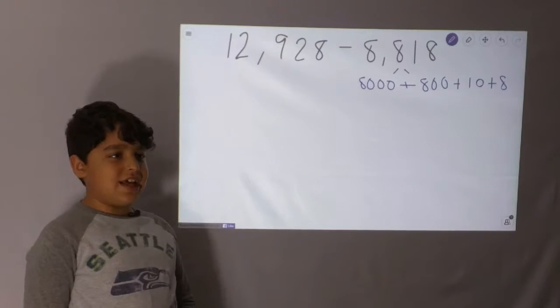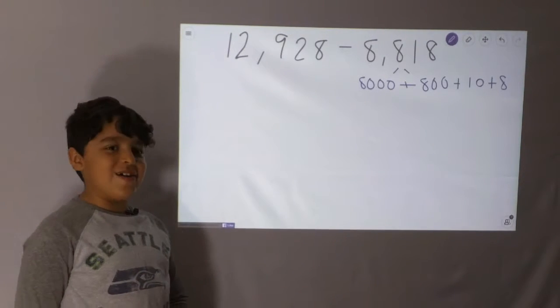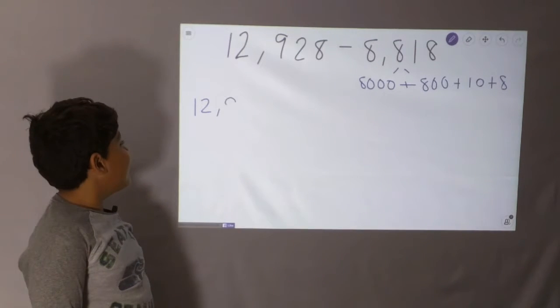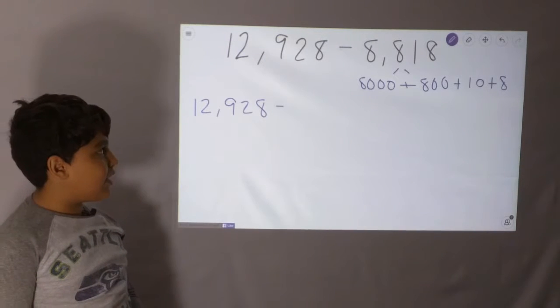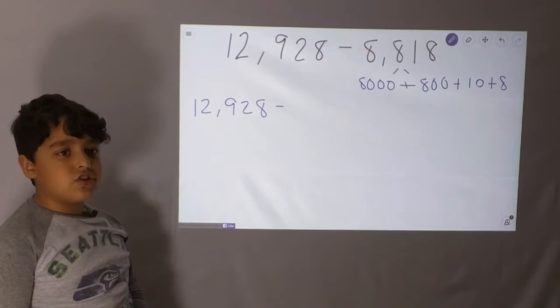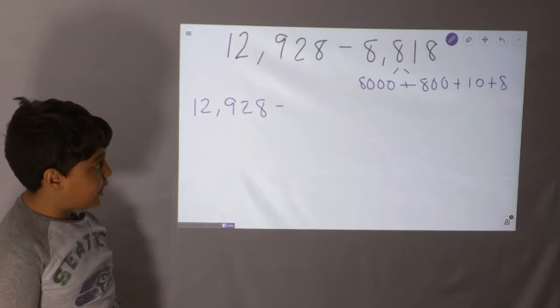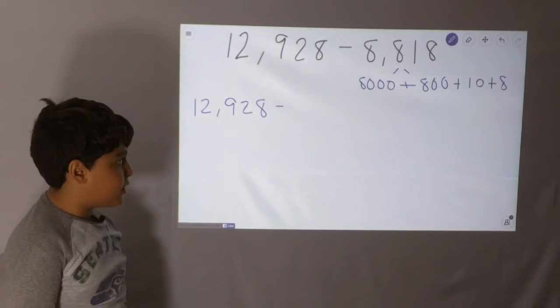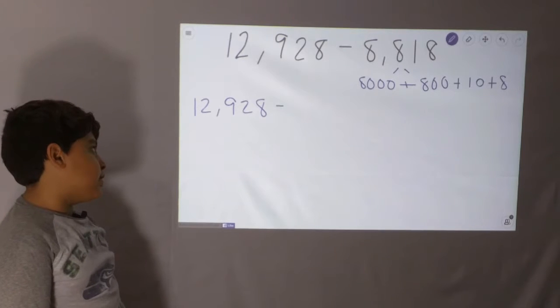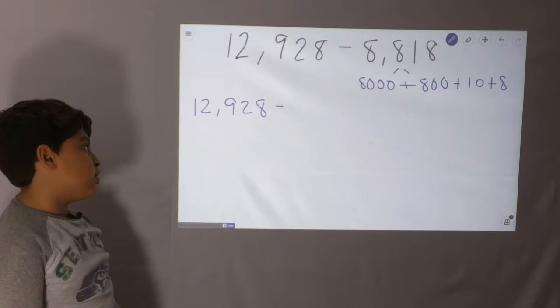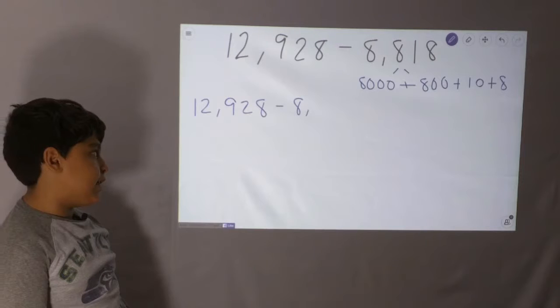This is our last problem. It's going to be hard, but we can do it. So, 12,000. Now, 8,818 is the same as 8,000 plus 800 plus 10 plus 8. So, now we're going to do 12,928 minus 8,000.